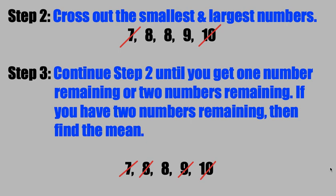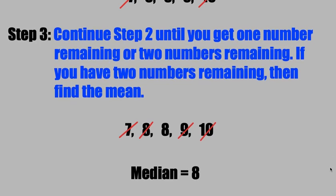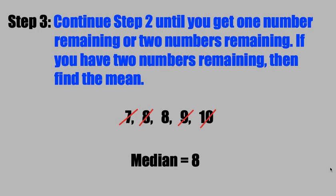In this case, we only have one number remaining after we cross out the smallest and the largest numbers, so therefore your median is 8.